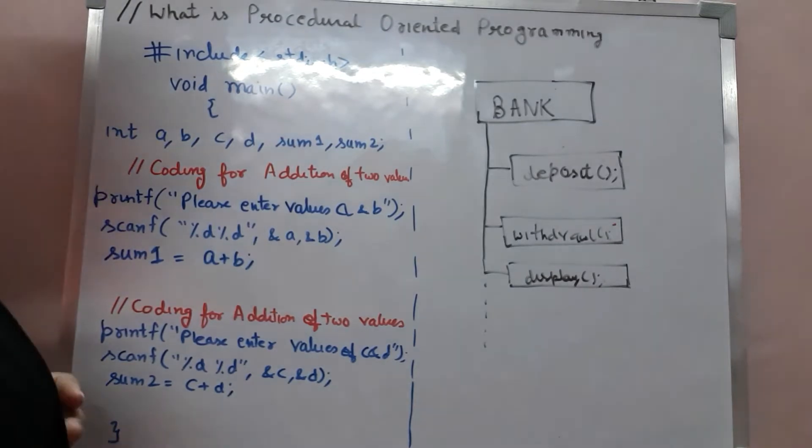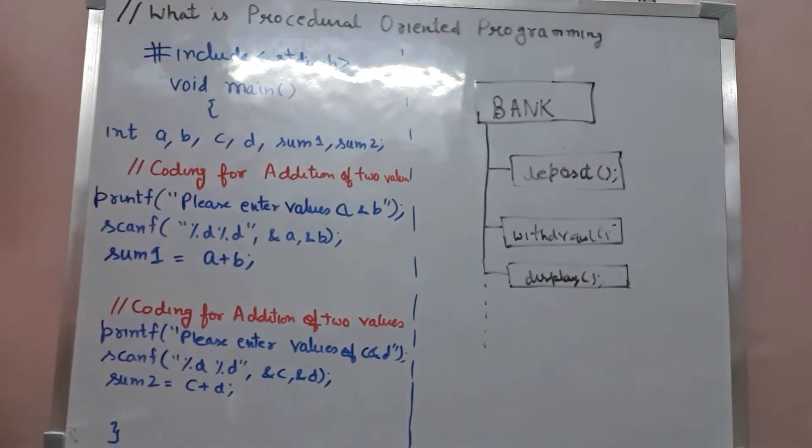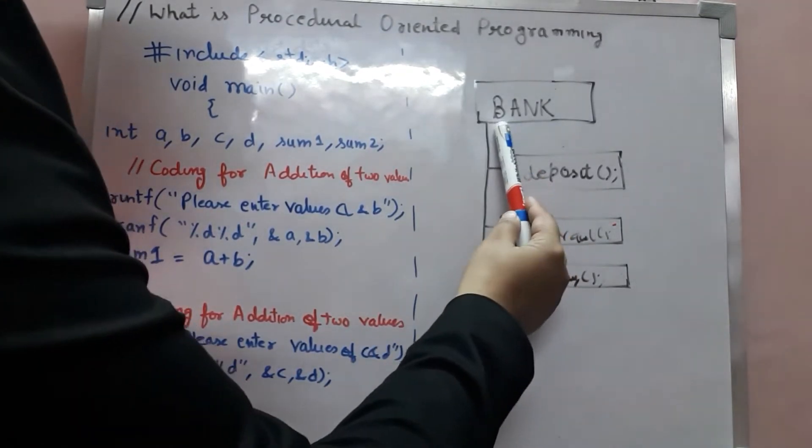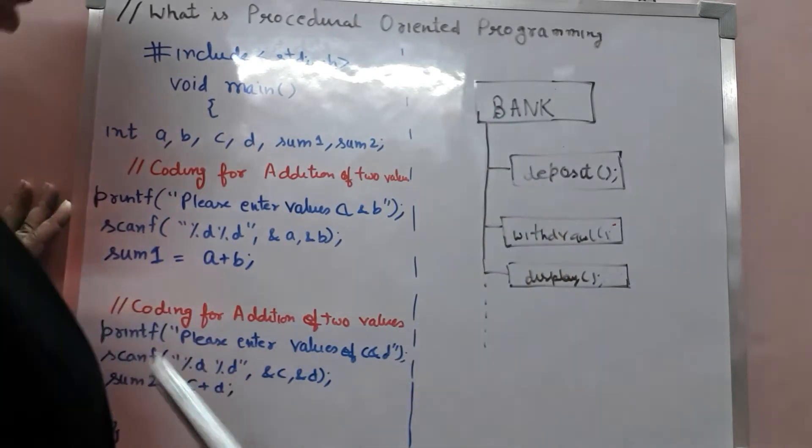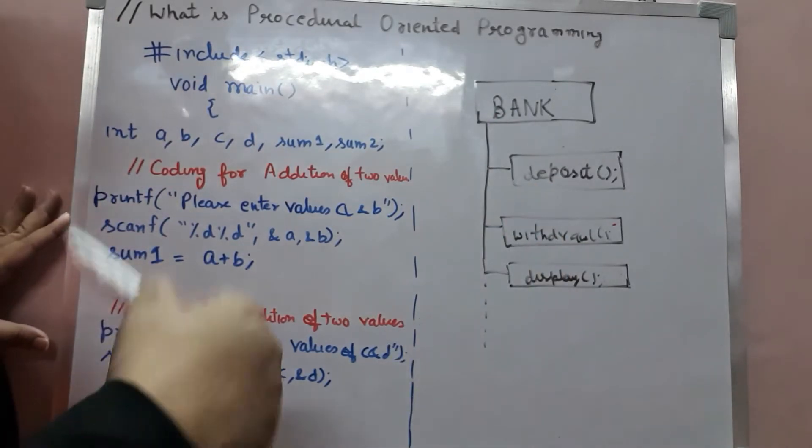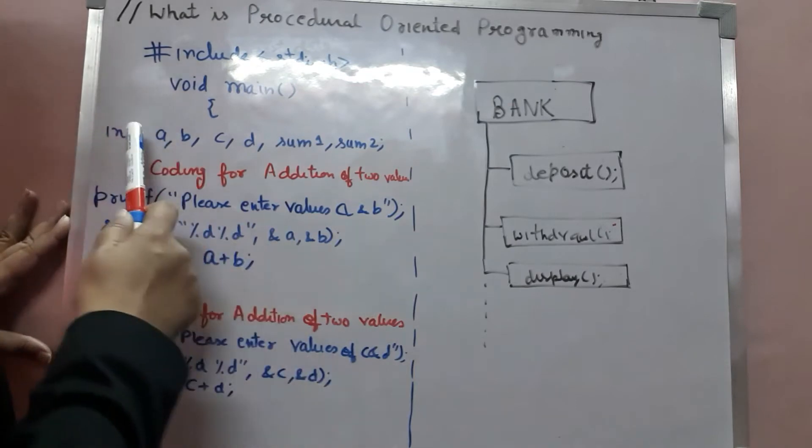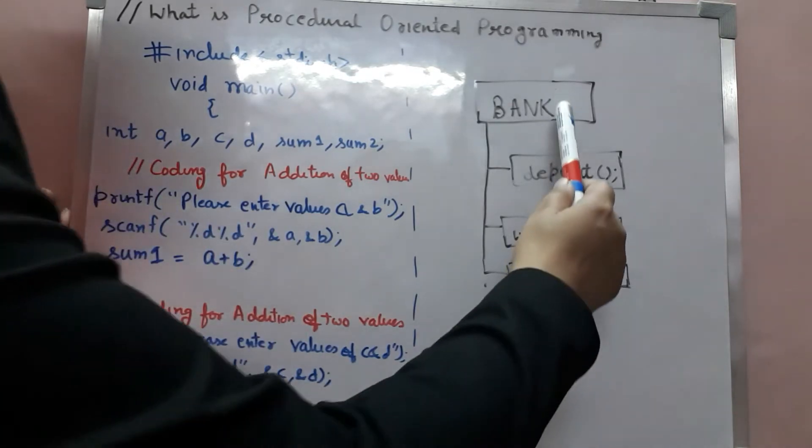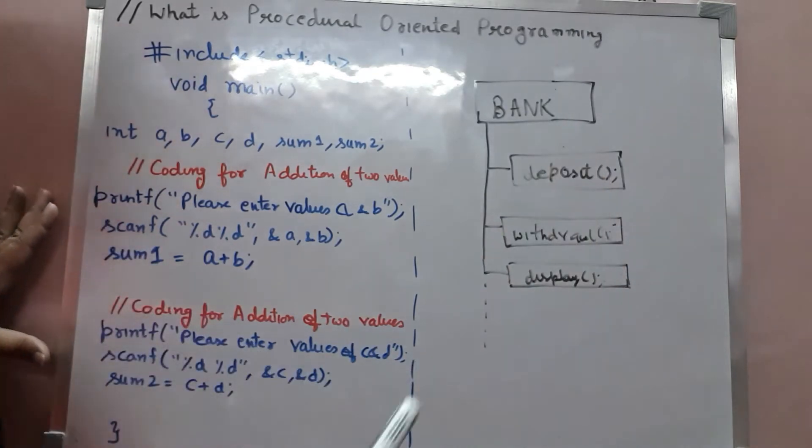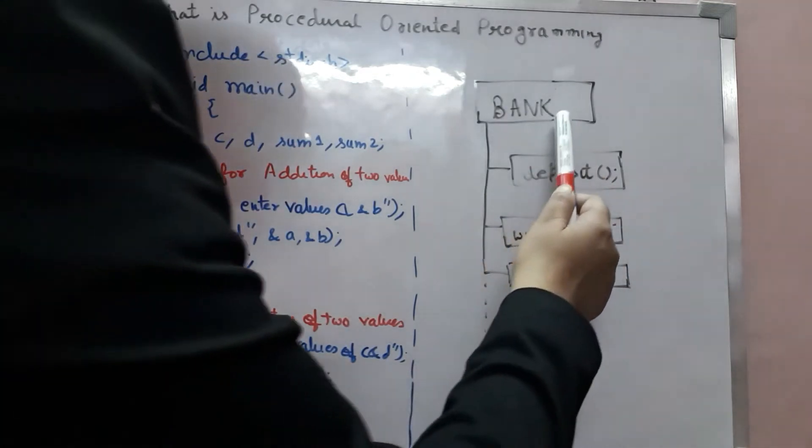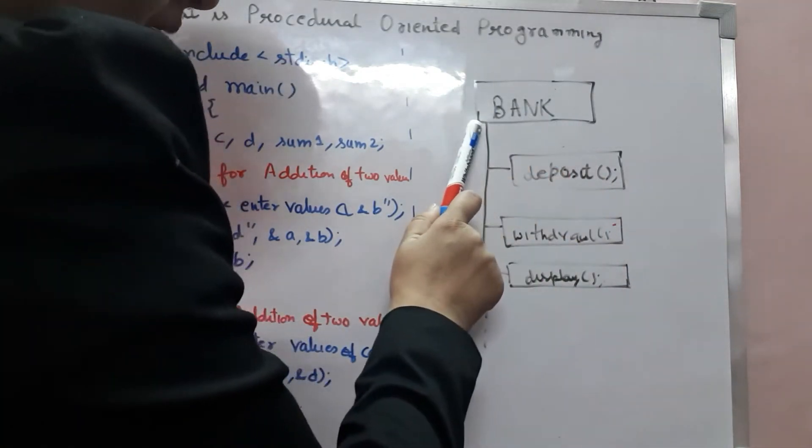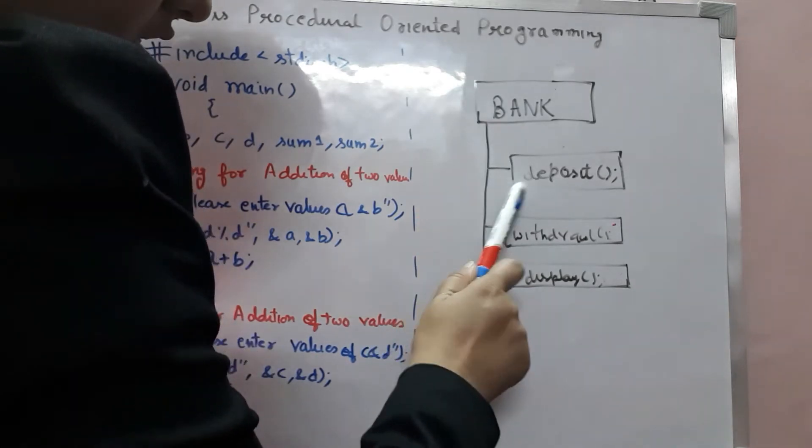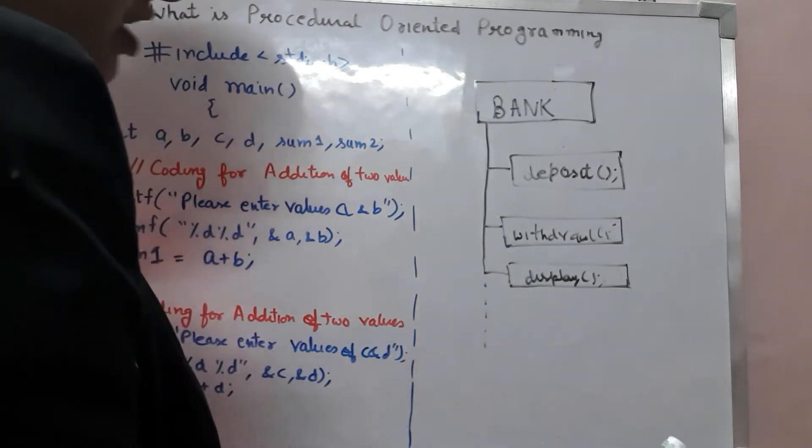Let's see this with an example. We have to do coding for this bank program. So what we can do, either we can code line by line or we can divide this bank program into different functions. For example, here I am dividing bank program into deposit, withdrawal and display function.